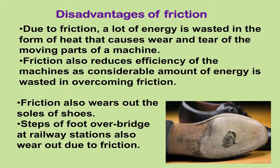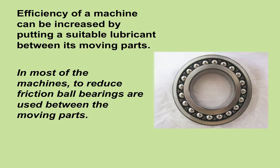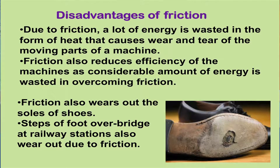Now let us discuss disadvantages of friction. Due to friction, a lot of energy is wasted in the form of heat that causes wear and tear of the moving parts of a machine. Friction also reduces the efficiency of machines as considerable energy is wasted in overcoming friction. However, the efficiency of a machine can be increased by putting a suitable lubricant between its moving parts. In most machines, to reduce friction, ball bearings are used between the moving parts. By using ball bearings, the sliding friction is replaced by rolling friction. As rolling friction is less than sliding friction, the friction between the moving parts is reduced. Friction also wears out the soles of shoes and the steps of footbridges at railway stations.